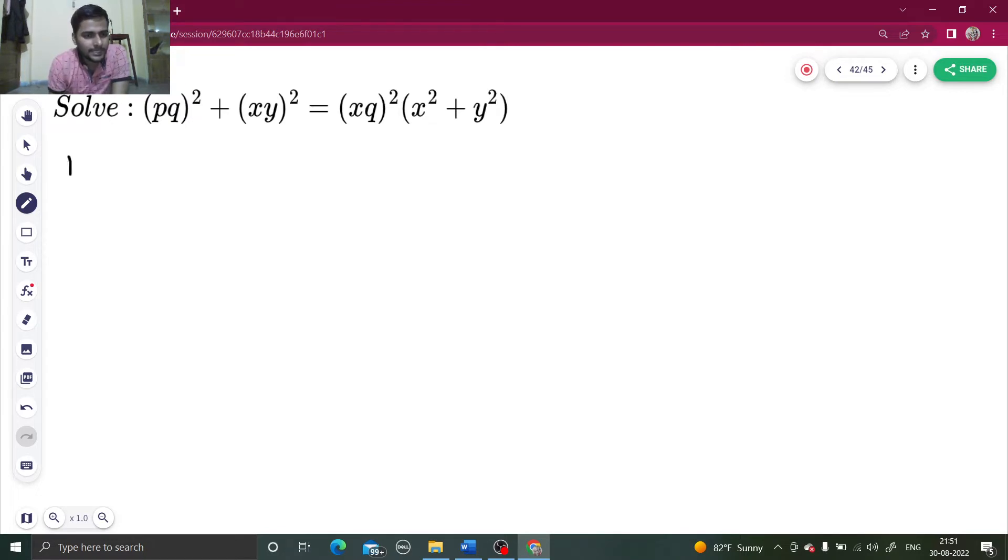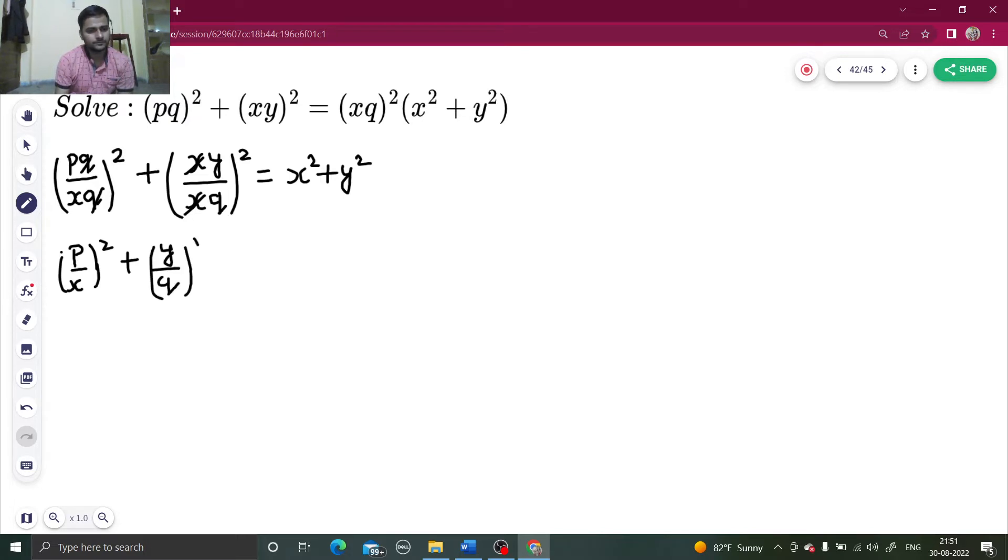So I will get PQ divided by XQ whole square as my first term, plus XY divided by XQ whole square as my second term, equals X squared plus Y squared. Now here, as you can see, Q gets cancelled, X gets cancelled, and you are getting P by X the whole square plus Y by Q the whole square equals X squared plus Y squared.